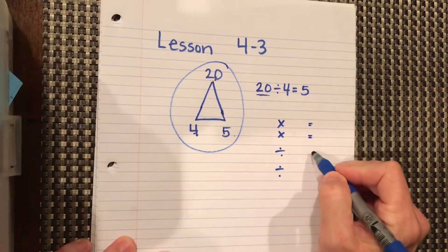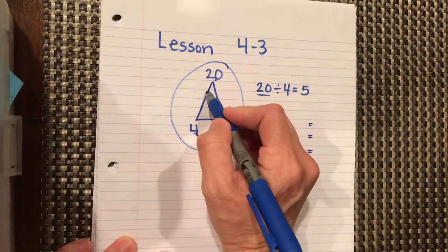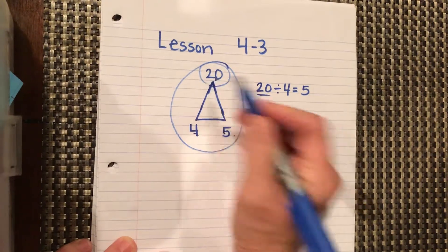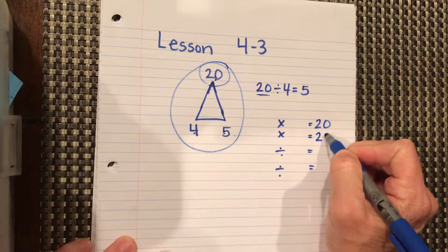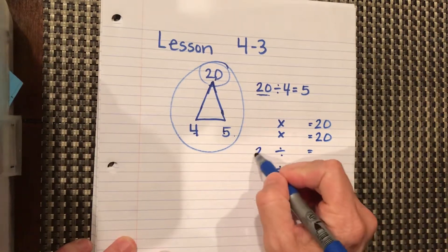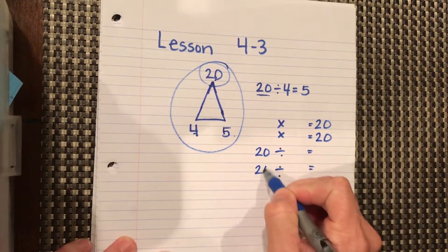We always write the number that's at the top of our mountain here is the product of our multiplication and the dividend of our division.